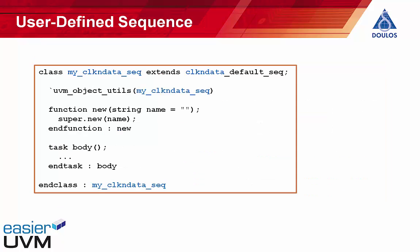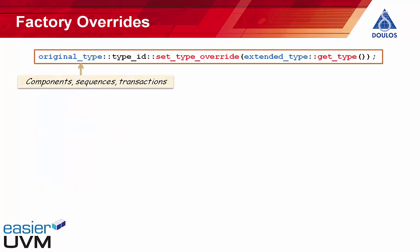Factory overrides come in two kinds. The first is a type override, where we're saying replace all instances of one type with another type. The types in question can be components, sequences, and transactions. Whenever you create a component, sequence, or transaction object, you should always do it using the factory method, as described in previous video tutorials. Use set_type_override whenever you want to replace all instances of any given component, sequence, or transaction with an alternative user-defined type.